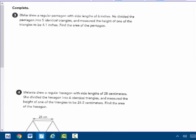Blake drew a regular pentagon with side lengths of 6 inches. He divided the pentagon into five identical triangles and measured the height of one of the triangles to be 4.1 inches. Find the area of the pentagon. So it's the same thing we just did.